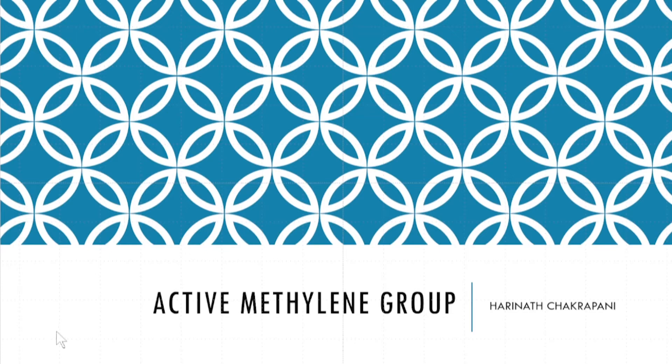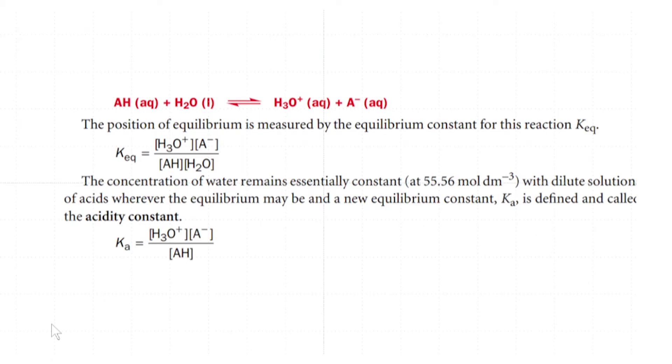The first concept that we need to understand is acidity. If we take an acid AH and put it in water, then if it is an acid, it is going to equilibrate to produce H3O+ and A-. The important concept here is that the position of this equilibrium is dictated by the stability of the conjugate base which is A-.